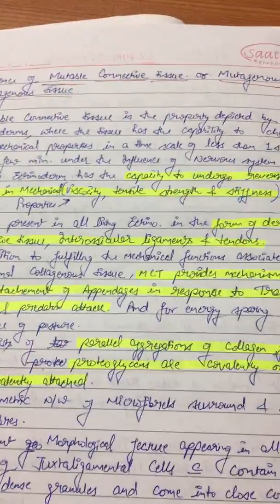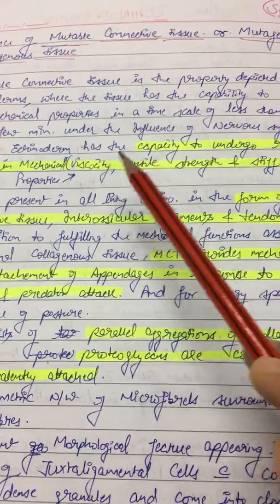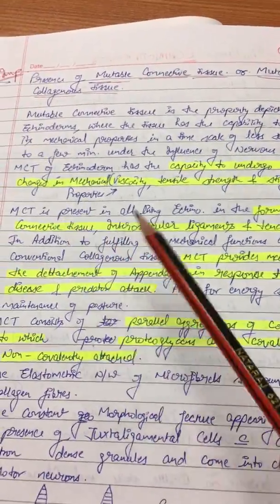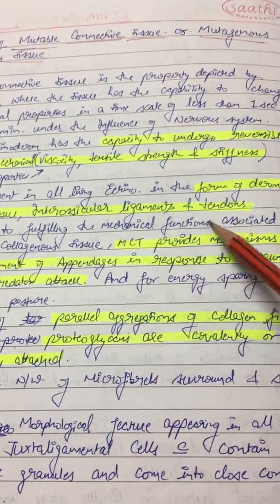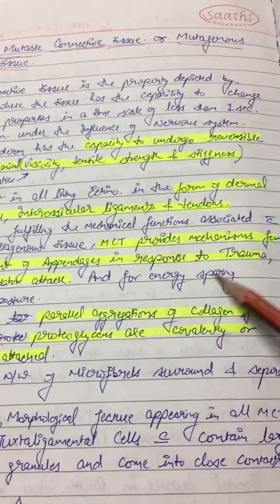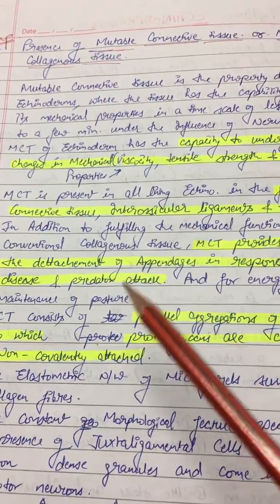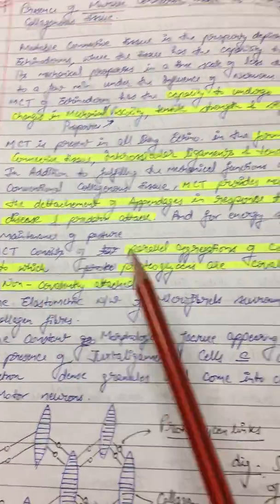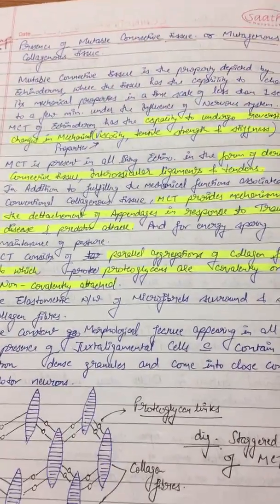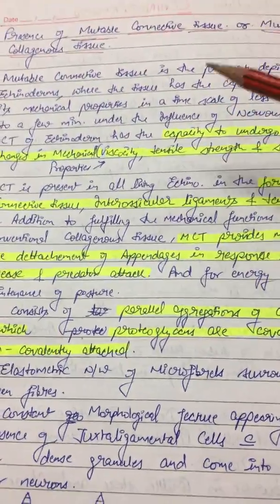The tissues have the capacity to undergo reversible changes in mechanical properties like viscosity, tensile strength, and stiffness. Mutable connective tissue is present in all living echinoderms in the form of dermal connective tissue, inter-ossicular ligaments, and tendons. MCT (mutable connective tissue) provides a mechanism for the detachment of appendages in response to trauma, disease, or predator attack, helping in detaching their organs. Its structure is a parallel aggregate of collagen fibers to which proteoglycans are either covalently or non-covalently attached.